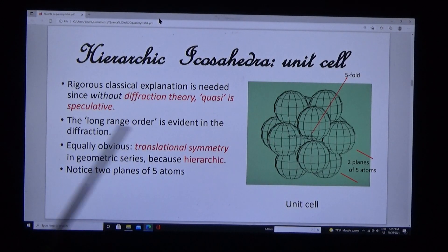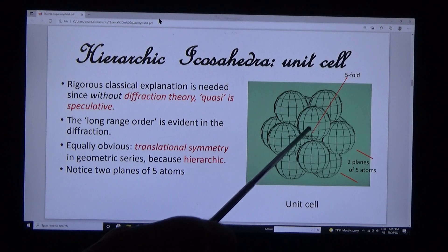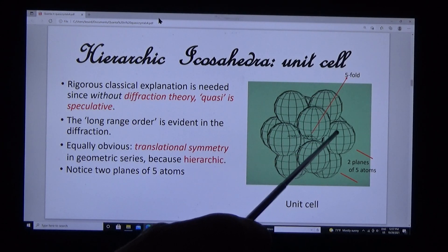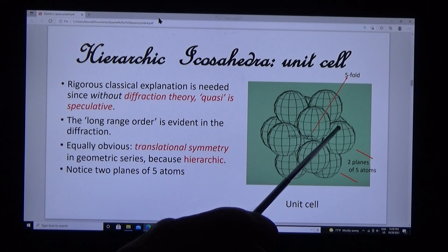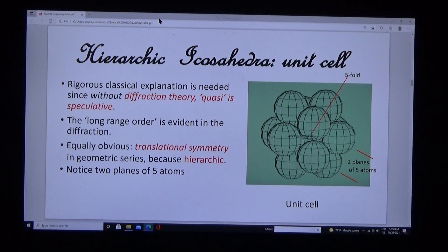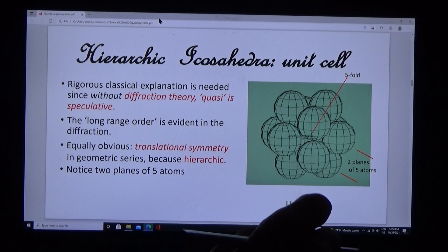Here's the unit cell: manganese at the center. Notice that normal to the five-fold axis is a circle of five atoms—aluminum atoms. Two circles of five aluminum atoms.